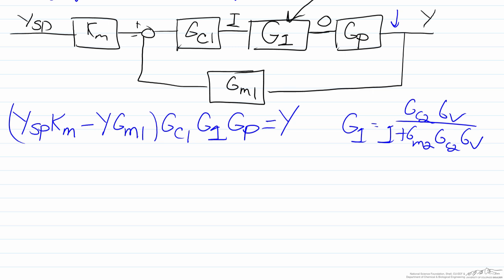So we can do the same thing as before. We will have ysp times Km times Gc1 G1 Gp. We will skip a step here. We know the y term is going to go over, so this will be plus y times Gm1 Gc1 G1 Gp.